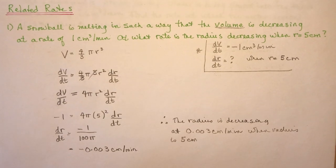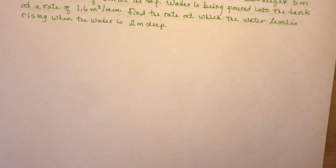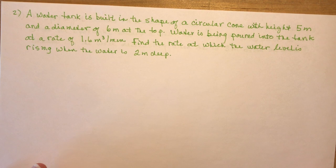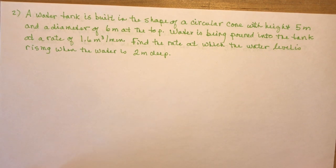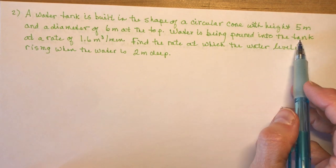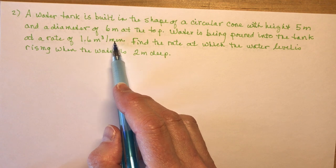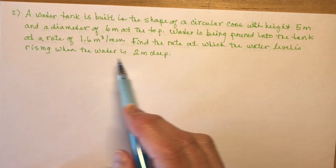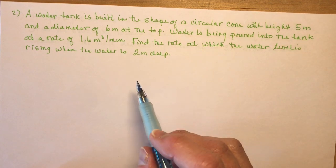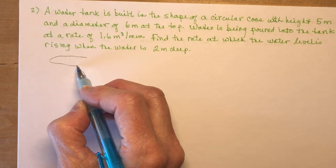A water tank is built in the shape of a circular cone with a height of five meters and a diameter of six meters at the top. Water is being poured into the tank at a rate of 1.6 meters cubed per minute. Find the rate at which the water level is rising when the water is two meters deep. So we need a little picture here — let's draw a cone.